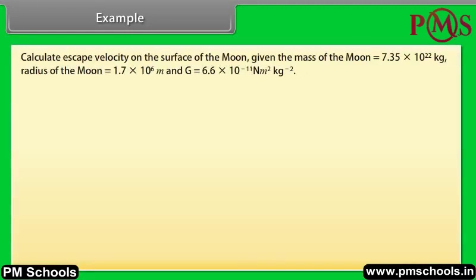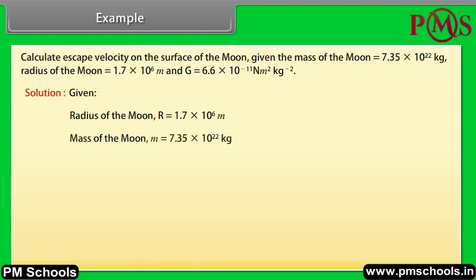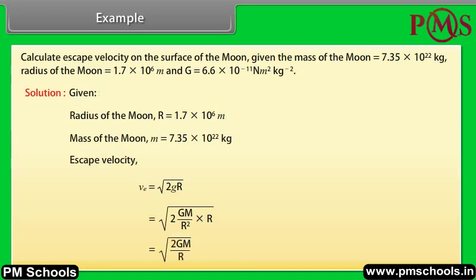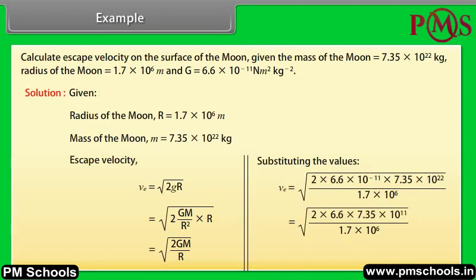Let's take an example of escape velocity. Calculate escape velocity on the surface of the moon. Given: radius of the moon r = 1.7 × 10⁶ m, mass of the moon m = 7.35 × 10²² kg. Escape velocity = √(2gr). By substituting the values using the formula escape velocity = √(2Gm/r), we get escape velocity = 2.4 × 10³ m/s.